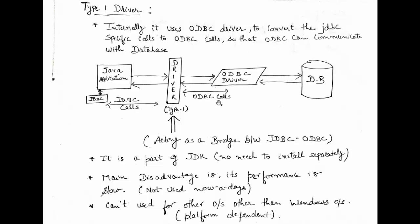Type 1 driver is also platform dependent. This is because ODBC was introduced by Microsoft and is completely restricted to the Windows operating system. It cannot be used on Linux, Mac, or any other operating system — it is entirely Windows-based. Due to this platform dependency, support for Type 1 driver has been deprecated. It was used up to Java 1.7, but from Java 1.8 onwards, the Type 1 driver is deprecated and no longer supported.